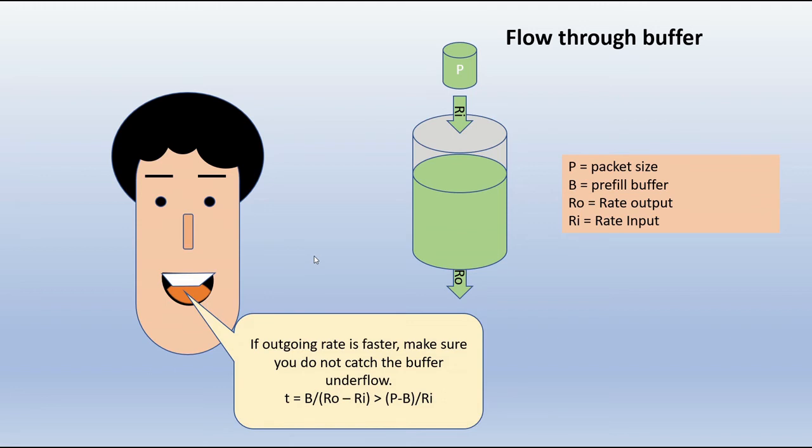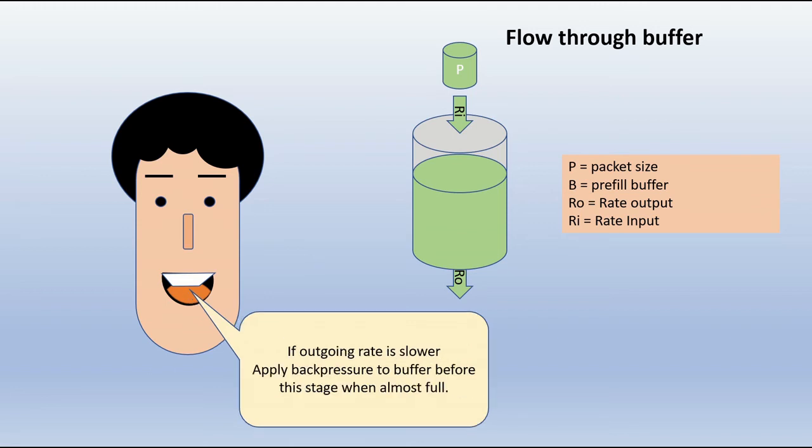The other side of the problem is if the outgoing rate is slower. Then what do you do? If the outgoing rate is slower, which means you are in danger of filling up the buffer, how do you avoid that condition?